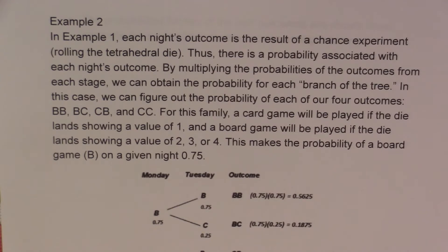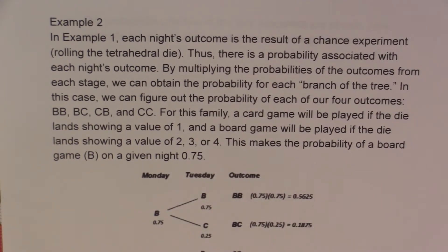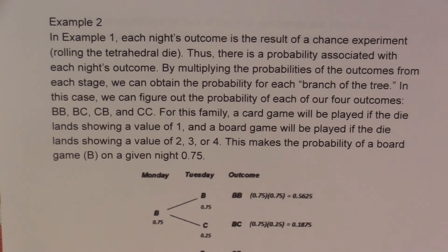In this case, we can figure out the probability for each of our four outcomes: BB, BC, CB, and CC. For this family, a card game will be played if the die lands showing a value of 1, and a board game will be played if the die lands showing a value of 2, 3, or 4. So this makes the probability of a board game B on any given night 0.75.